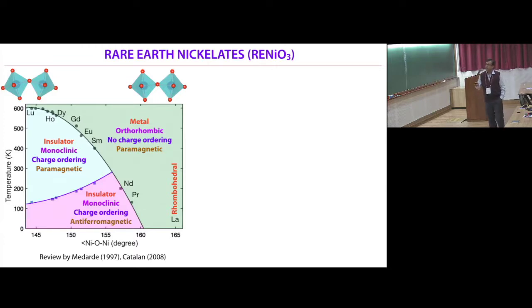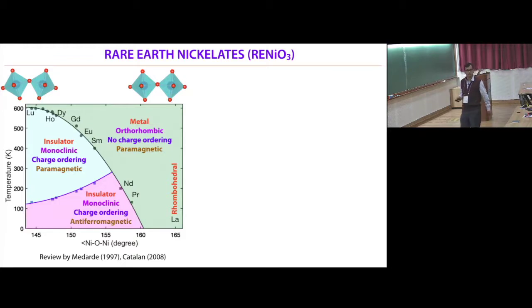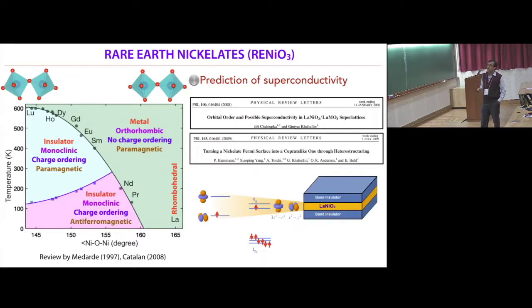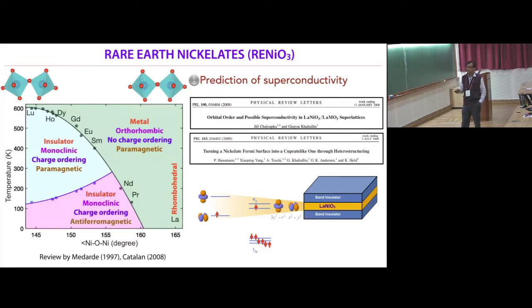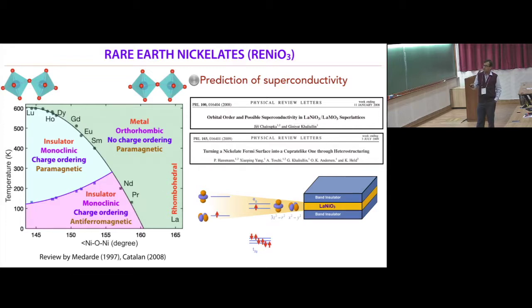Now I will come to the real system: rare earth nickelates. As a function of temperature and bond angle, if the angle is less distorted you are here, and if more distorted you move in the other direction. These materials have been studied extensively since the mid-2000s. In 2008, there were reports that you can get superconductivity in these rare earth nickelates by heterostructuring. The main idea was that nickel has a d7 electron configuration — one electron in the eg orbitals — and by heterostructuring you can lift the degeneracy to get a dx²−y² orbital with one hole, analogous to the high-Tc cuprates.